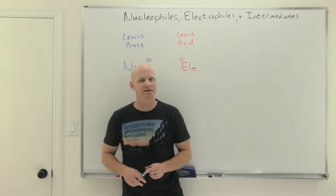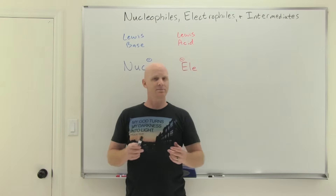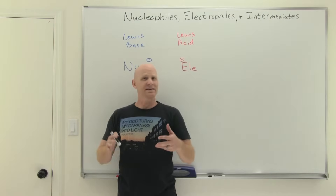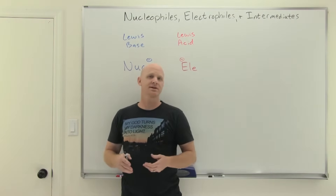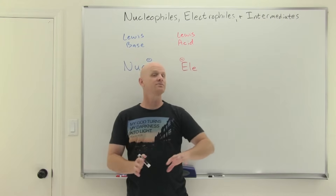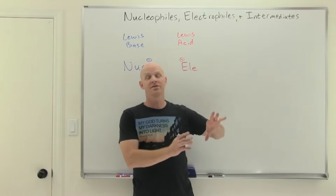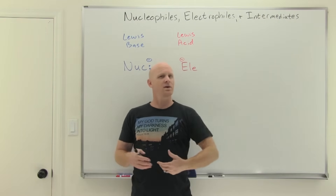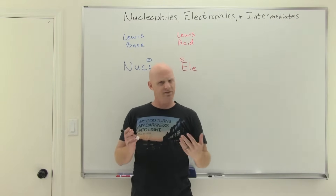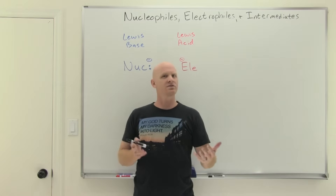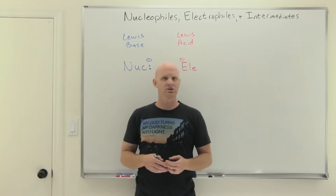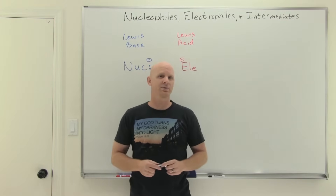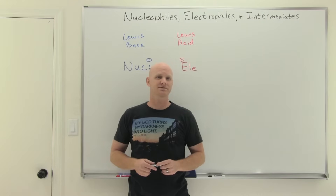Nucleophiles, electrophiles, and intermediates — we're going to be studying them in this lesson. These are some of the key players in the organic reaction mechanisms that we're going to focus on in the next lesson. We're going to identify what these nucleophiles and electrophiles are, and what these intermediates often look like, so we can incorporate them into our organic reaction mechanisms.